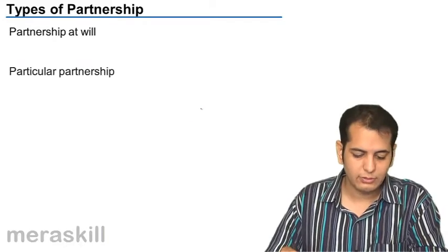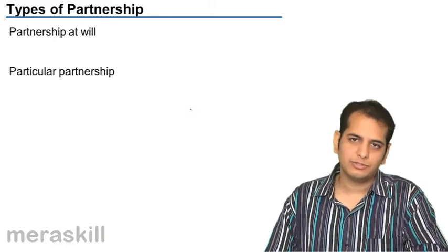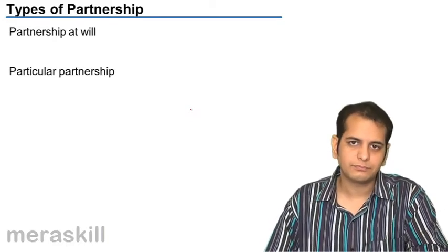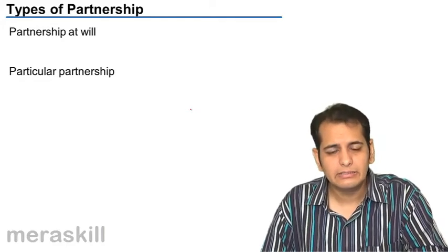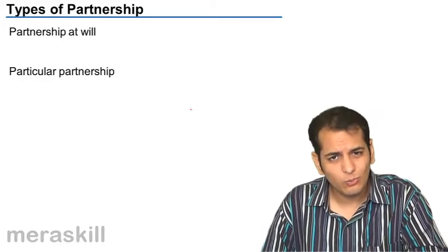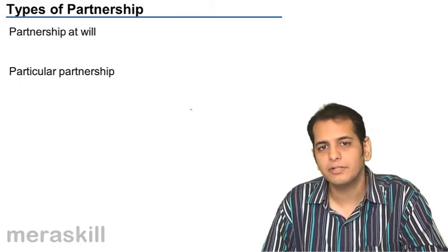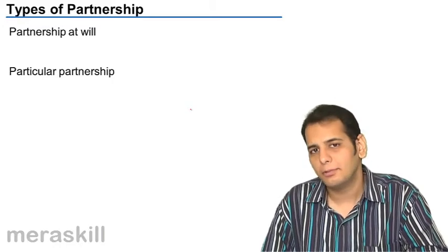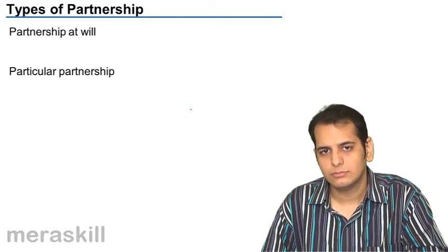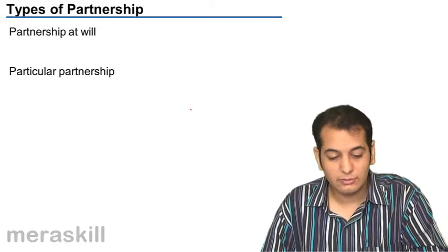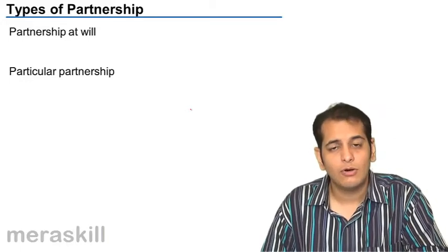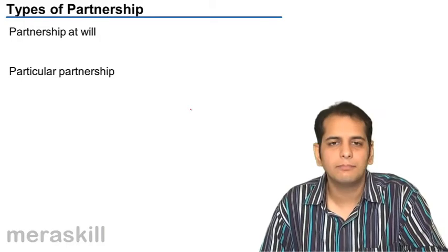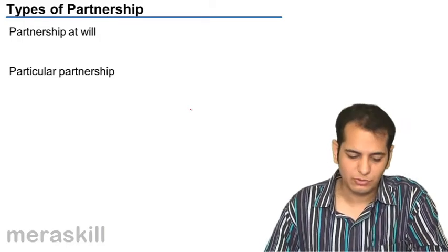The next is particular partnership. Particular partnership means it is existent only for a particular period or for a particular purpose. And once the period expires, the firm will dissolve, or once that purpose is accomplished, the firm will get dissolved.